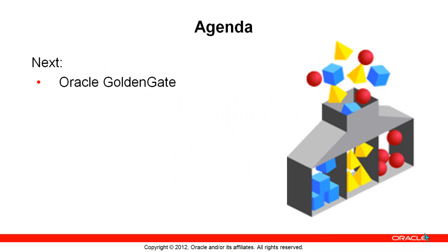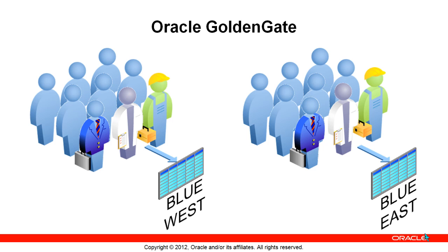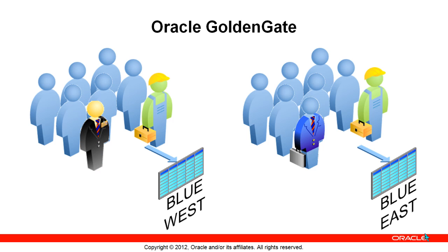Now that we've covered Oracle Data Integrator, let's look at the other main product, Oracle GoldenGate. Using software such as Oracle GoldenGate, you can maintain two copies of the same table. Both east and west are being kept in sync with each other. A worker is inserted into the west copy — the guy in the hard hat with the toolbox — and almost immediately a copy is replicated to the east table. A lab tech is deleted from the east copy — the guy in the white lab coat — and almost immediately a copy is deleted from the west table. A middle manager is updated in the west copy — the blue suit with the briefcase — and almost immediately the copy is updated in the east table.